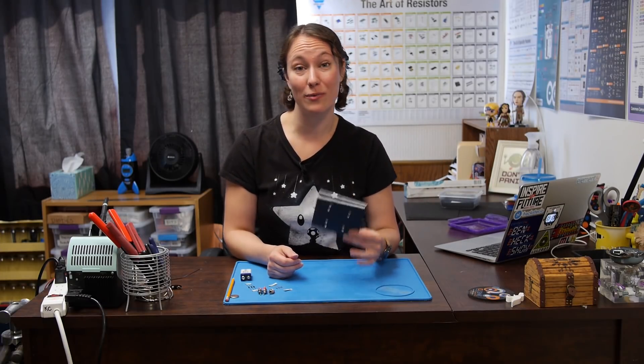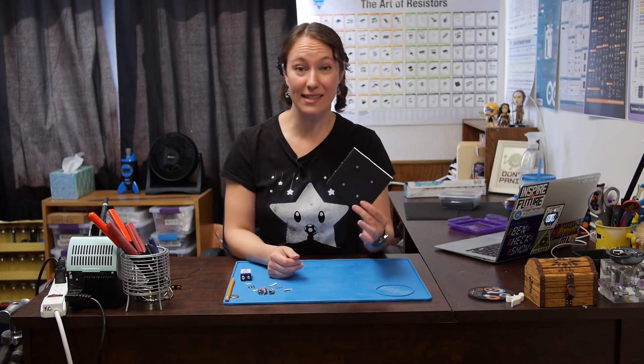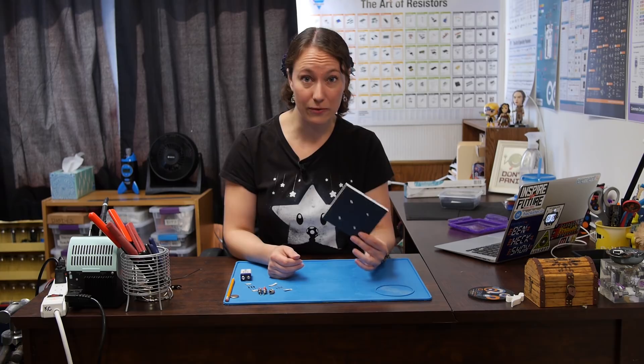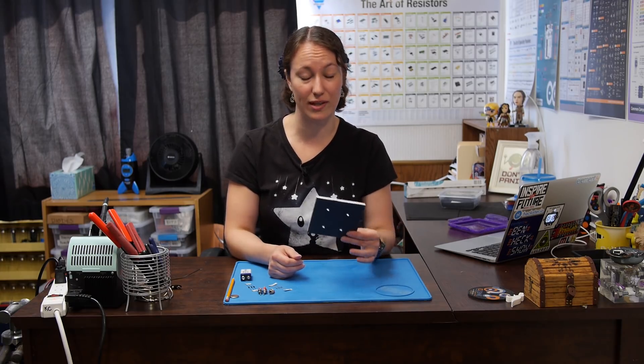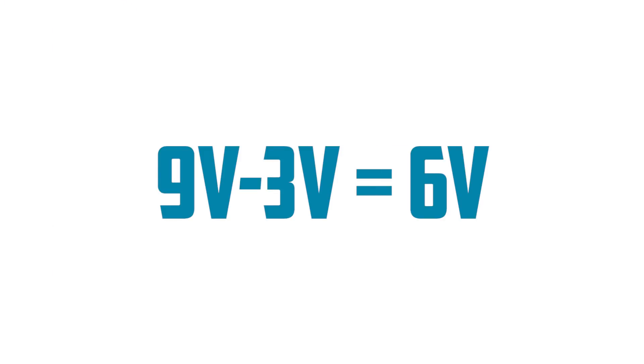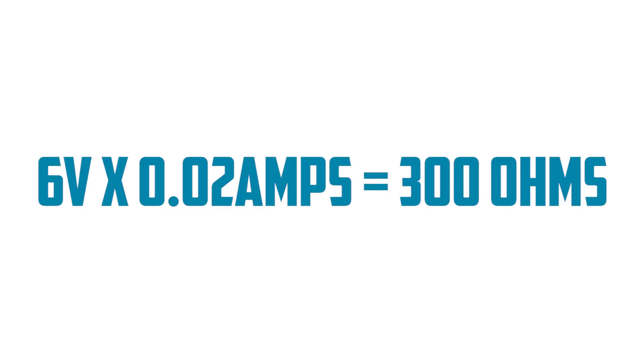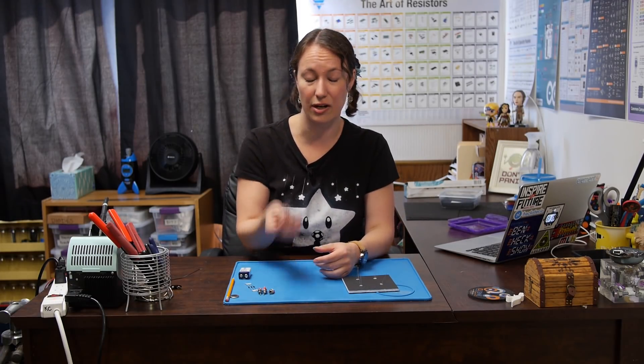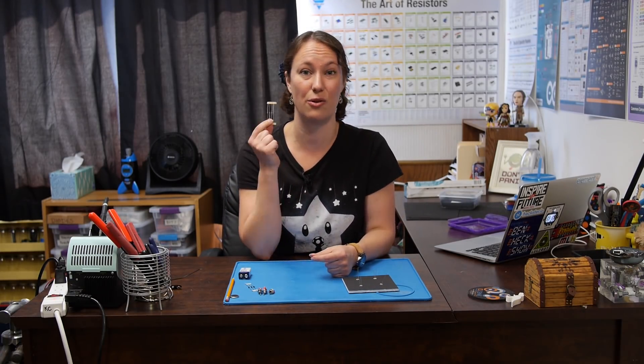Now we need to figure out what resistors to use. Now these LEDs are rated for about three volts each and at 20 milliamps. So that's 0.02 amps in our Ohm's law equation. So if we take our nine volts and subtract the three volts that these are rated for, we get six volts. If we plug that into the Ohm's law equation, six divided by 0.02, we get 300 ohms of resistance. Now the closest resistors I have for that line around are 330 ohm resistors. So those will work.